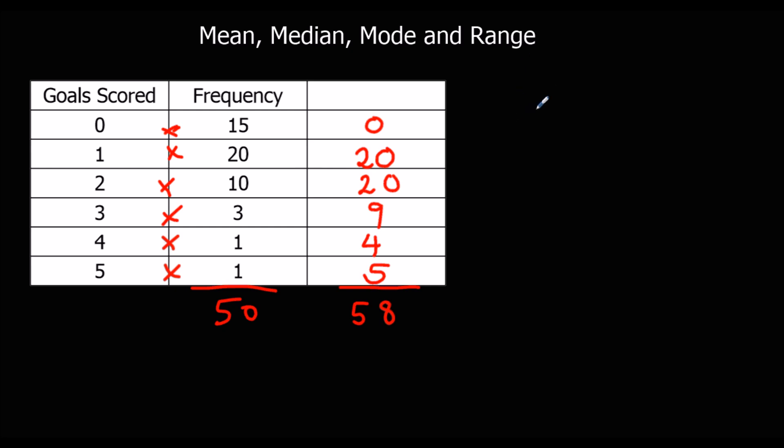So 58 goals scored in total in 50 games. So the mean is 58. That's what they add up to. Divide by 50. That's how many. So 58 divided by 50. Well, that'd be 116 over 100, which is 1.16. We could have used a calculator for that.